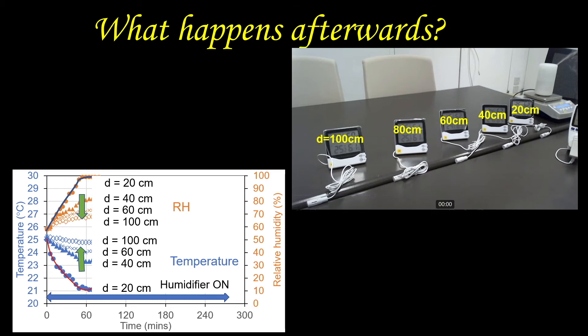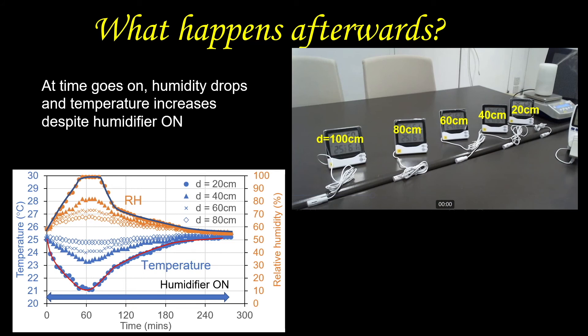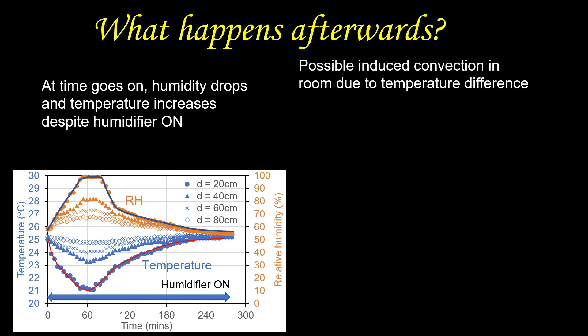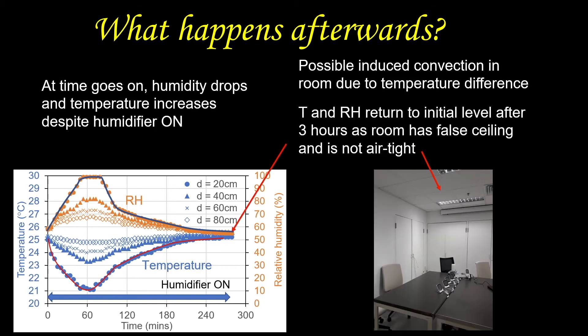You may wonder whether the humidifier can continuously increase the relative humidity of the room. Here is what happens as time goes on. Surprisingly, the humidity drops and the temperature increases despite the humidifier being on. The changes may be due to induced convection in the room caused by temperature differences. Another reason is that the room we did the experiment in has a forced ceiling, which is not airtight. So as time goes on, fresh air comes in from the ceiling, causing the temperature and relative humidity to return to normal.